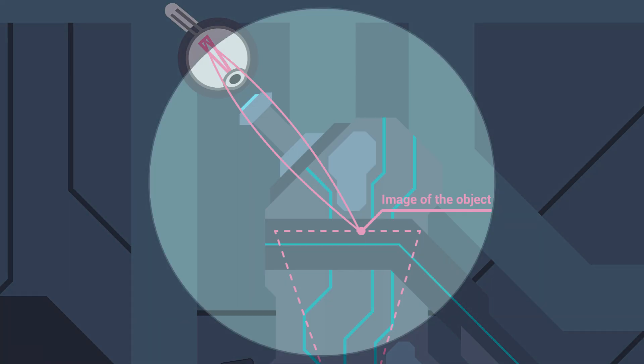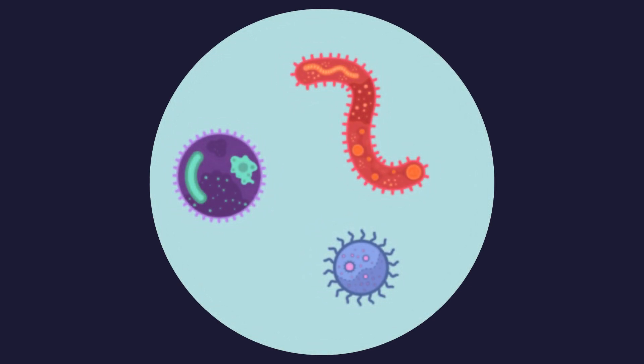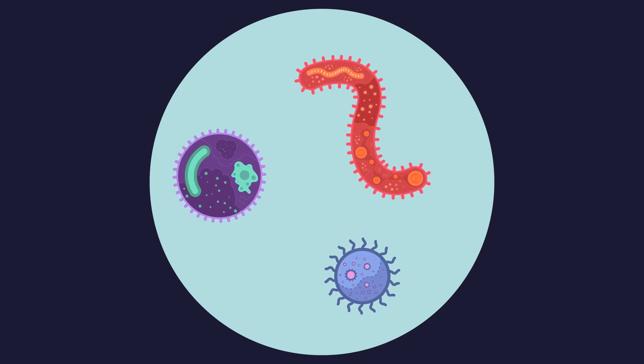When we view this object from a point beyond the focal distance, the image of the object is magnified and inverted. The further away from the focal point we are, the more magnified the object appears.